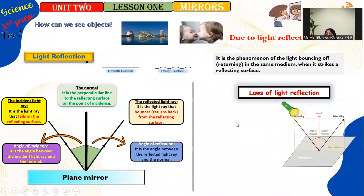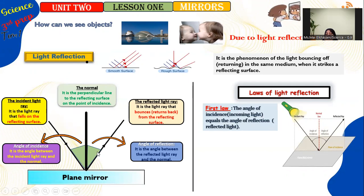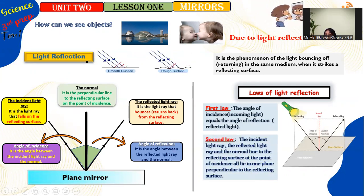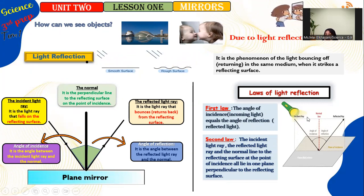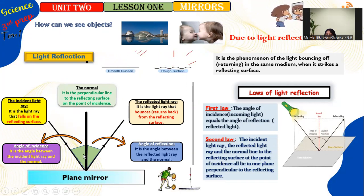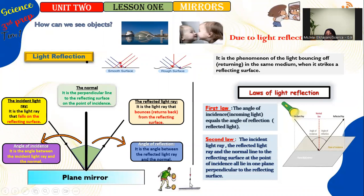The Laws of Light Reflection: the First Law states that the angle of incidence equals the angle of reflection. The Second Law states that the incident light ray, the reflected light ray, and the normal all lie in one plane perpendicular to the reflecting surface. Important: if the incident ray falls perpendicular to the mirror (along the normal), the angle of incidence equals the angle of reflection equals zero.